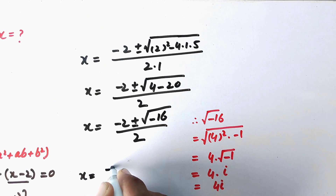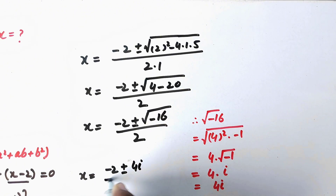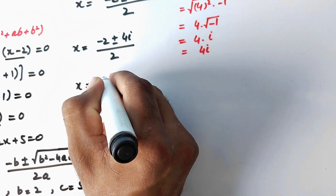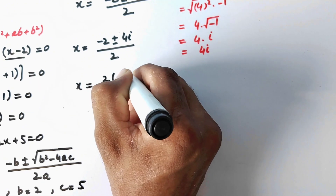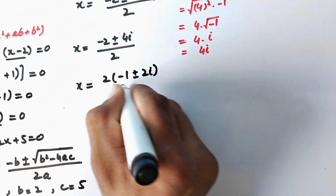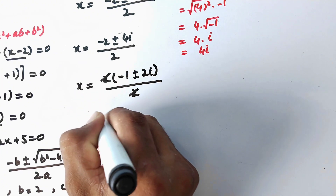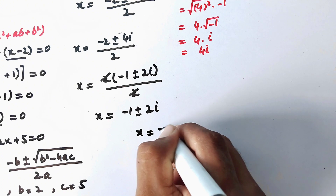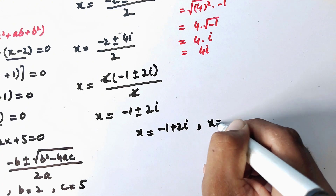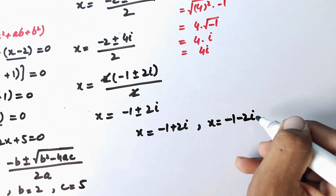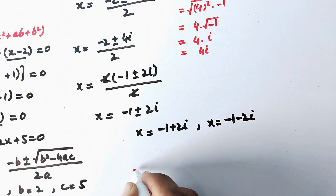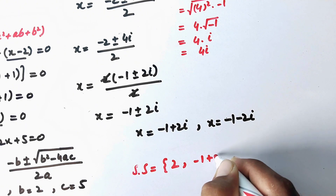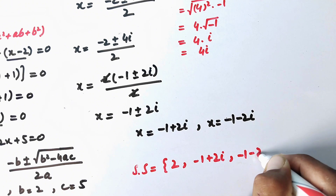So x equals minus 2 plus or minus 4 iota, over 2. Taking 2 as common from the numerator gives (minus 1 plus or minus 2 iota) over 2, and the 2 cancels with the denominator. We are left with x equals minus 1 plus 2 iota, or x equals minus 1 minus 2 iota. Since we had a degree 3 equation, we have 3 solutions. The solution set is x equals 2, minus 1 plus 2 iota, or minus 1 minus 2 iota.